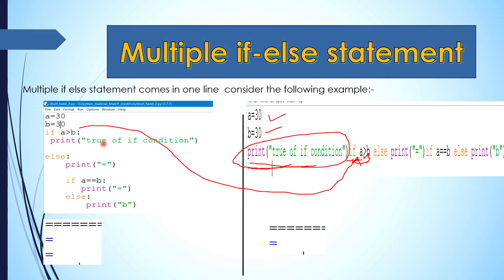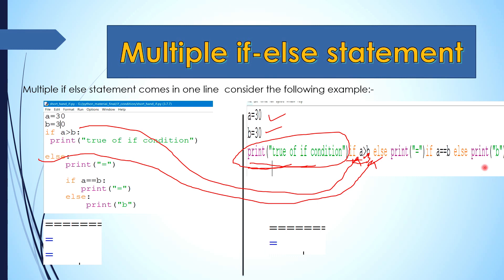So here is how it is written: if a is greater than b — this is the condition — then the statement that executes is the print true part. If the condition is false, then we go to the else block. In the else block, we check the condition again: if a equals b, we print equal.